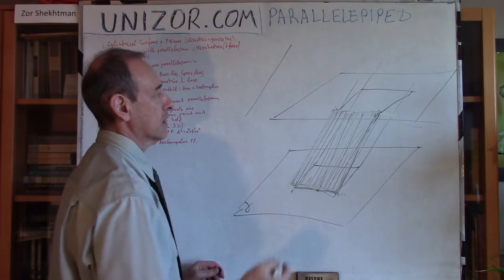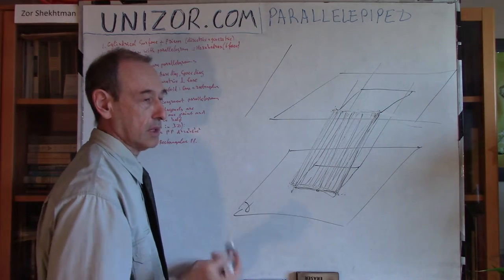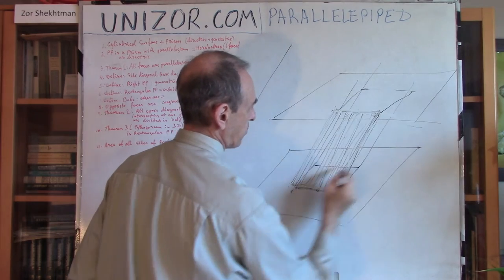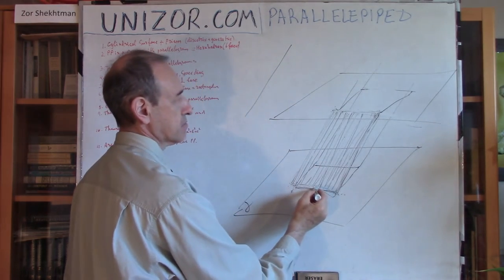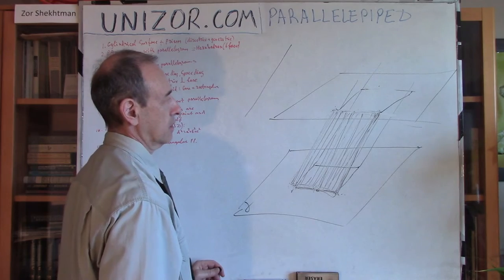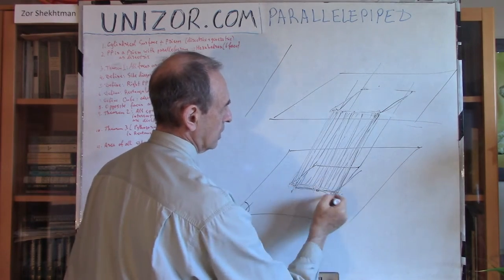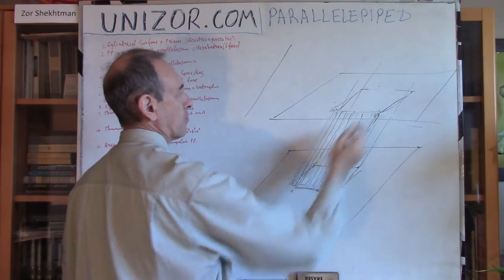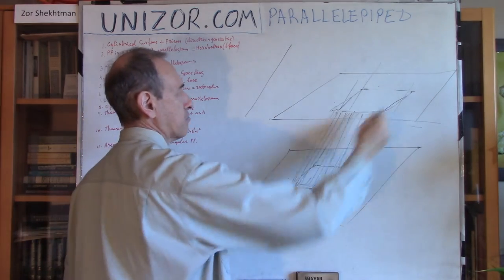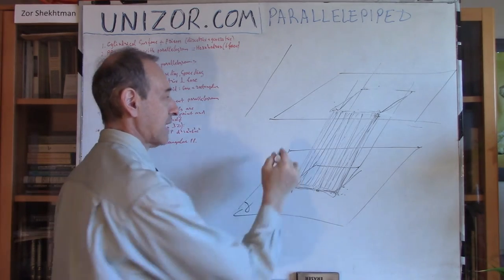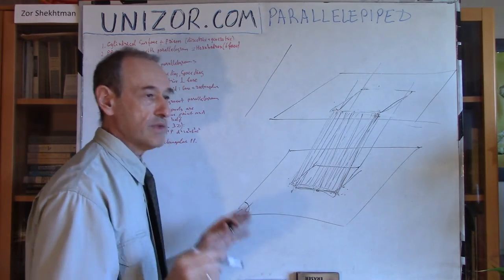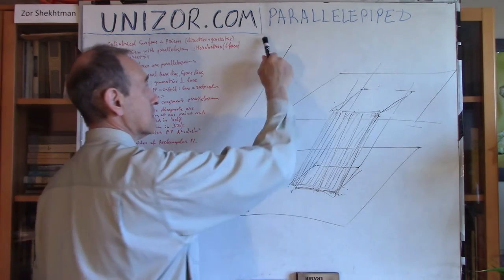What remains to be proven is that the top face is also a parallelogram. That's easy: this side is parallel to the opposite side because the side face is a parallelogram. Similarly, the other pair of top edges are parallel to corresponding bottom edges, and since those are parallel to each other, the top edges are parallel too. So on the top we have a quadrilateral with opposite sides parallel — which is a parallelogram. This proves that every face, the side faces, bottom base, and top base, are all parallelograms. So 'parallelepiped' is a justified name.